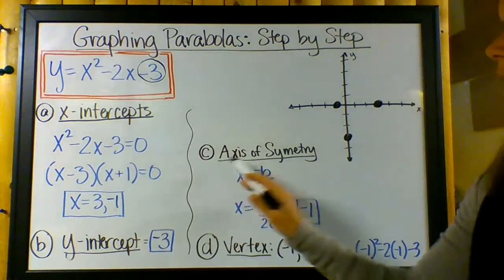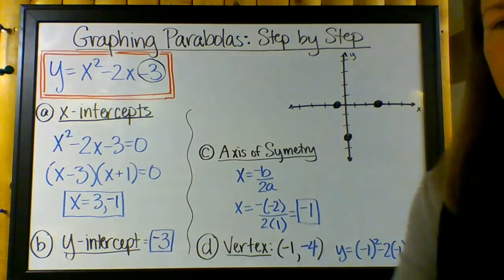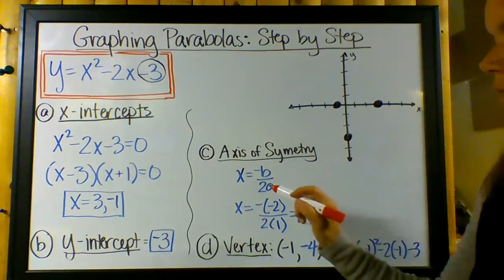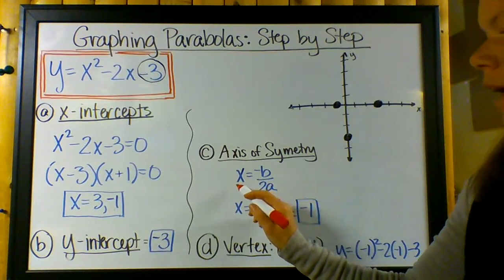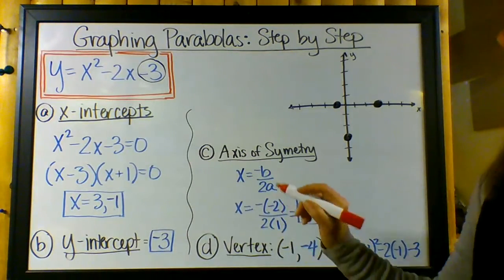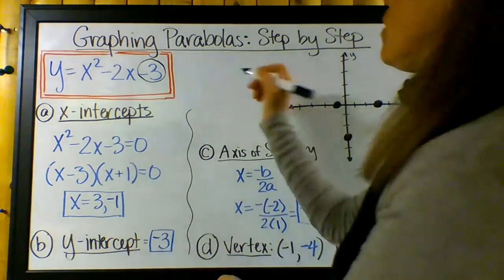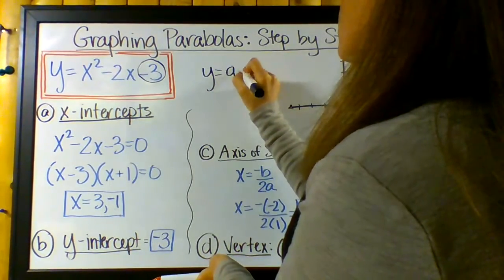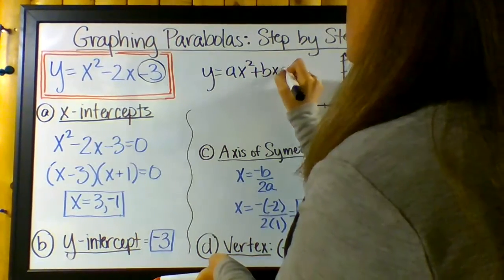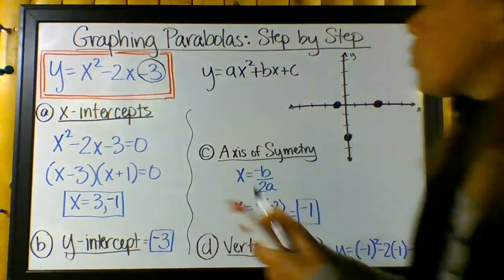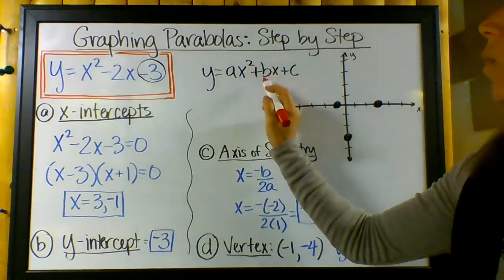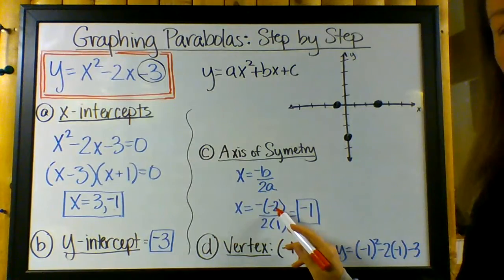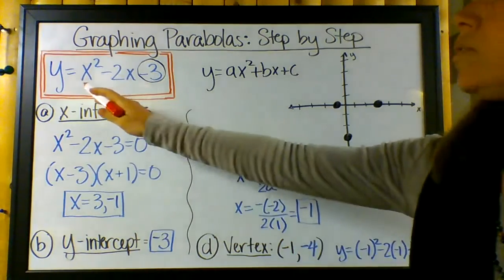So we're at c now. Now we're looking for the axis of symmetry. I'm going to get out my red marker here. So the axis of symmetry is where x equals negative b over 2a. And this is this equation where y equals ax squared plus bx plus c.